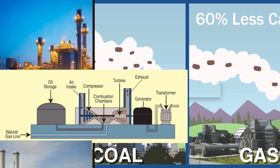Gas turbines are the heart of gas power plants. These turbines have compressor sections that compress air, a combustion chamber where natural gas is burned, and a turbine section that extracts energy from the expanding hot gases. Some gas power plants also employ combined cycle technology, which includes both gas and steam turbines to extract more energy from the exhaust gases, increasing overall efficiency.